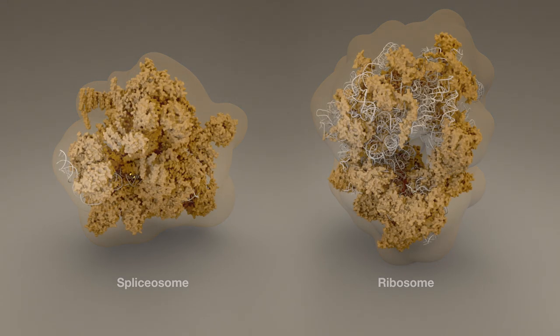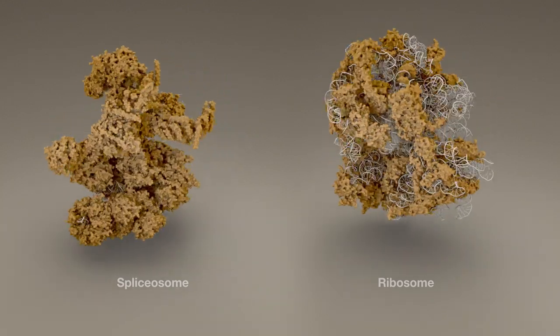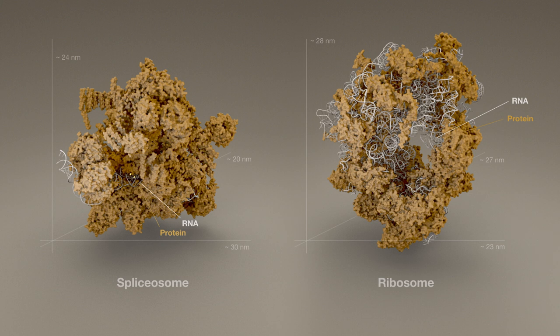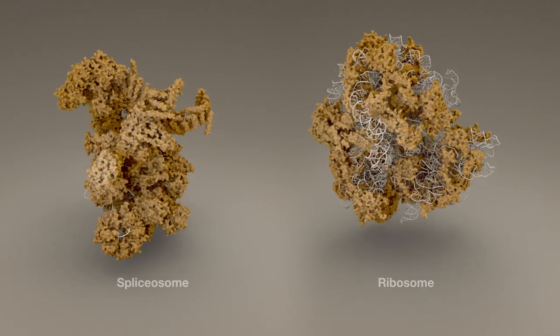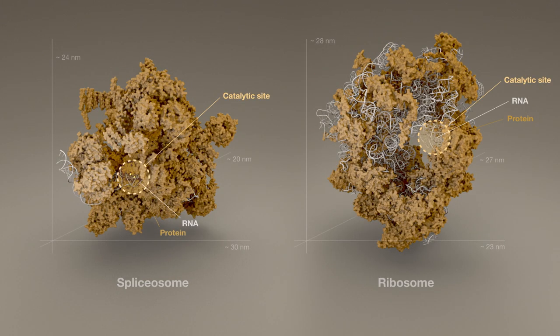Consider the spliceosome, the cellular machinery which carries out splicing, versus the ribosome, which synthesizes protein. Built from RNA and protein to choreograph splicing, the spliceosome assumes an extended asymmetric morphology compared to the ribosome, which exhibits a more isometric shape. Both harness molecular organization of RNAs in their catalytic sites.